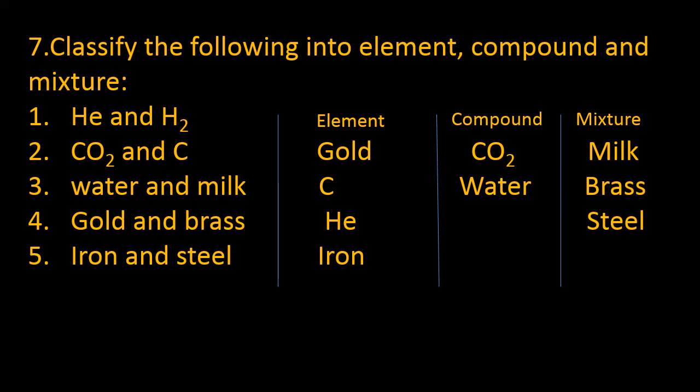Gold and brass. Gold is an element having same atomic number, and brass is a mixture made up of two metals. Iron and steel. Iron is an element while steel is a mixture.